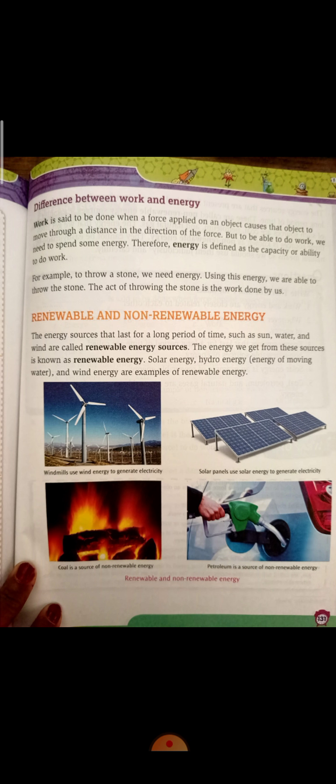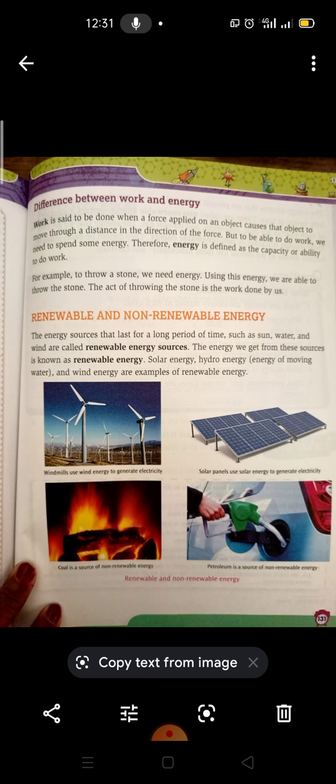Next is renewable and non-renewable energy. The energy sources that last for a long period of time, such as sun, water, and wind, are called renewable. For example, sunlight is available today and tomorrow as well. That type of energy is called a renewable source of energy. Solar energy, hydro energy, and wind energy are all examples of renewable energy.